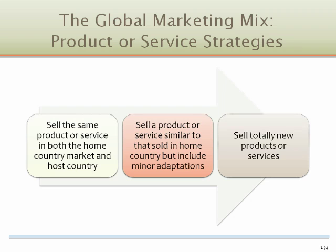There are three potential global product strategies: sell the same product or service in both the home and host country; sell a product similar to that sold in the home country but include minor adaptations; or sell totally new products and services. Products at the extreme ends of high-tech, such as electronics, computers, and software, or high-touch, such as luxury goods and jewelry, are easy to standardize, but those in the middle generally require varying levels of adaptation to local markets.